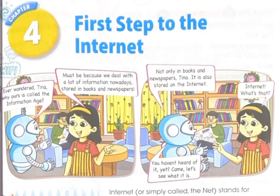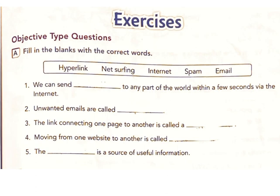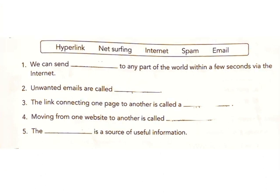Lesson 4: First Step to the Internet. Exercises: Objective Type Questions. A. Fill in the blanks with the correct words. Word bank: hyperlink, net surfing, internet, spam, email. Question 1: We can do any part of the world within a few seconds via...